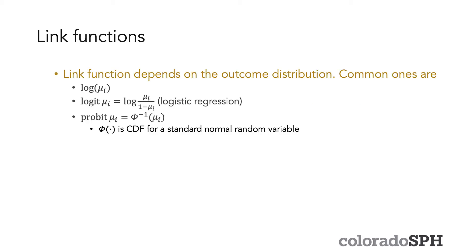So let's talk a little bit more about link functions. The link function g that you choose when you're doing a GLM depends on what the distribution of your outcome is. And there are a couple common ones. So you might think of taking the log of mu_i. You would do this if you have Poisson data or count data.